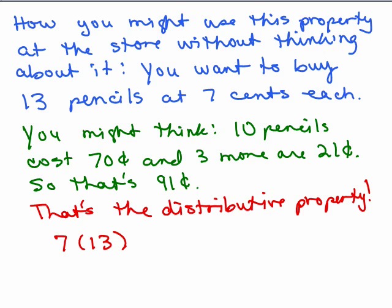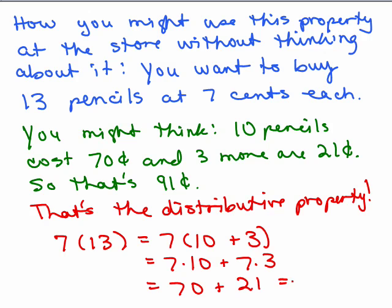Often people use the distributive property without thinking about it. So here's how you might use this property at the store without thinking about it. Let's say you want to buy 13 pencils at 7 cents each. So most people know that would be 13 times 7 or 7 times 13. But you might just think, well, 10 pencils at 7 cents each cost 70 cents, and 3 more at 7 cents each cost 21 cents, so that's 91 cents total. That's just the distributive property. So how is that? So you have 7 times 13. What you're doing is breaking up that 13 into 10 plus 3. And then you do 7 times 10 and 7 times 3 to get 70 plus 21, or 91. So even though you're not getting out a piece of paper and doing all this algebra in your head, basically you ended up doing 7 times 10 and 7 times 3, and then adding them together.